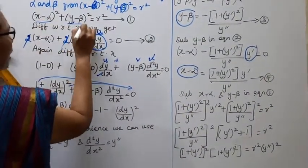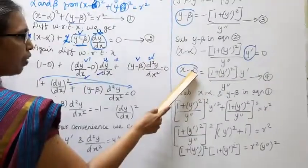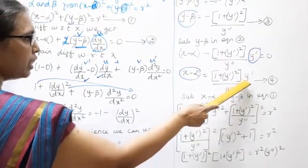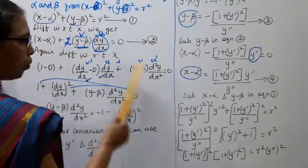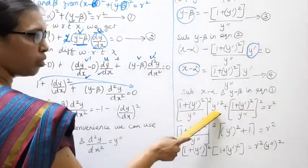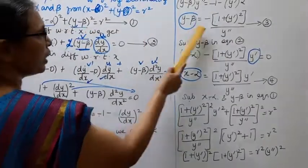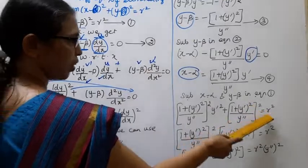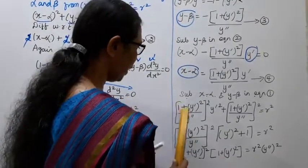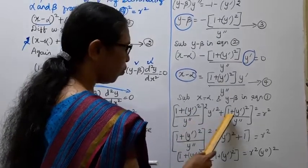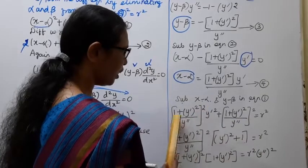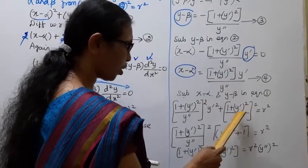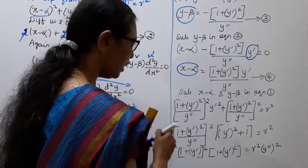Substituting x − alpha and y − beta into equation 1: [−(1 + y'²)/y'' · y']² + [(1 + y'²)/y'']² = r². Expanding: (1 + y'²)²·(y')² / (y'')² + (1 + y'²)² / (y'')² = r².